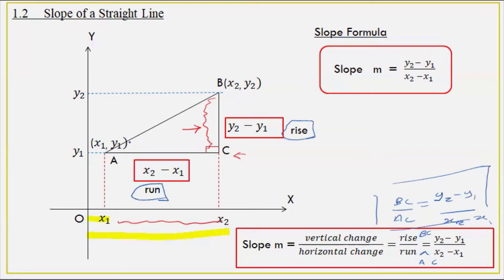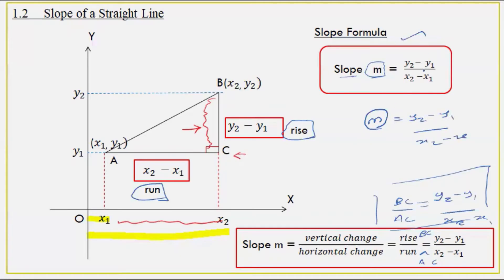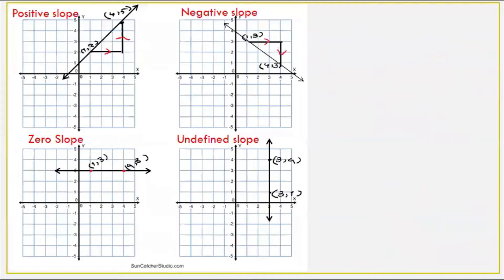You can see the slope formula: the slope is called m, and m equals y2 minus y1 by x2 minus x1. This formula can also be written as y1 minus y2 by x1 minus x2.